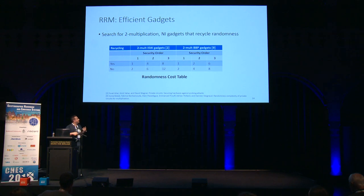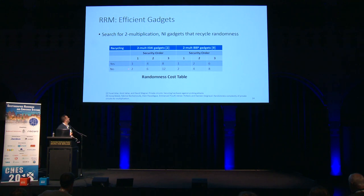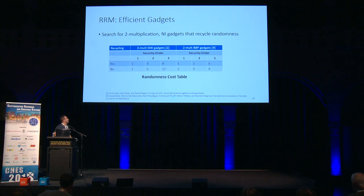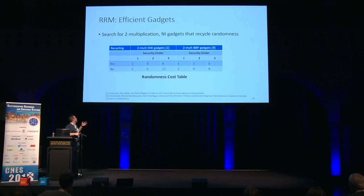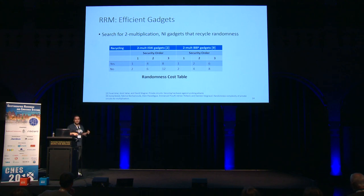The last step was to look for efficient multiplication gadgets. We looked for ISW gadgets of security order 1, 2, and 3. Without recycling using two multiplications, you need 2, 6, or 12 random elements. With recycling, you can drop it to 1, 4, or 8 — roughly a 20 to 30% improvement, which is quite helpful given that RNG is often slow. Even the more randomness-aware BBP gadget published by Belaide et al., which already tried to reduce randomness, can still benefit from recycling on top, yielding some nice additional margins.